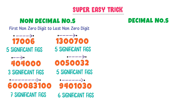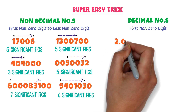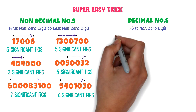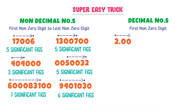Now, in case of decimal numbers, go from the first non-zero digit to the last digit. This is always the difficult part for students, but I will make it super easy. For example, consider a decimal number where the first non-zero digit is 2. Go from 2 to the last digit — 1, 2, 3 — so there are three significant figures in this number.